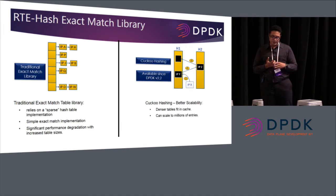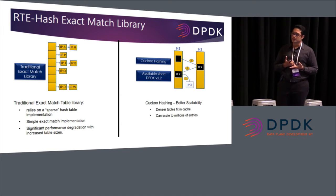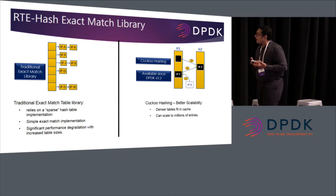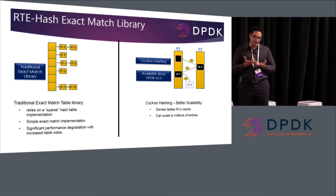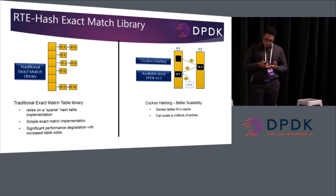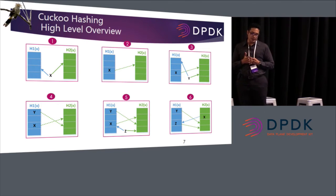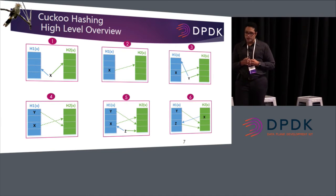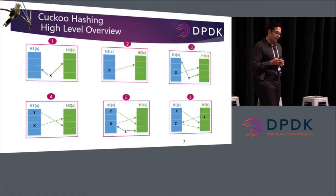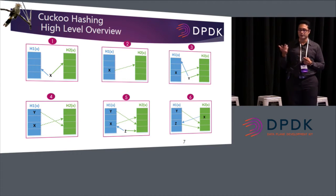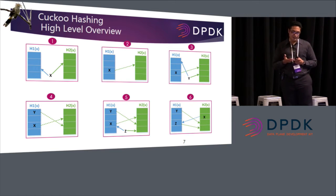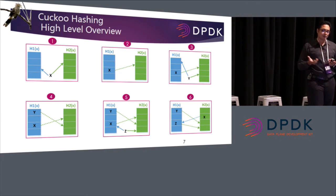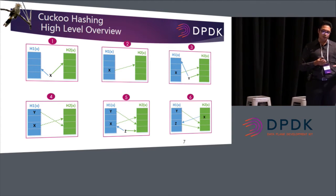The idea of cuckoo hashing: instead of using a single hash function, it uses two hash functions. The main target for cuckoo hashing is to have more flows inserted in the table — a denser table that fits in the cache. It gets its name from the cuckoo bird, which does not build its own nest. It hacks on other birds' nests, pushing other birds out. That's what cuckoo hashing does.